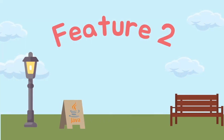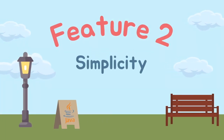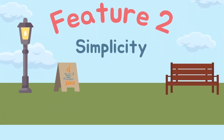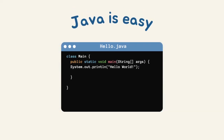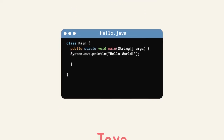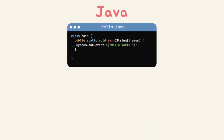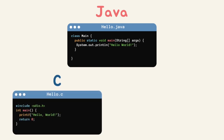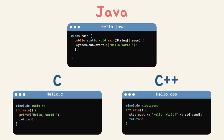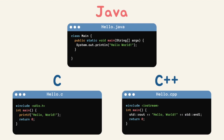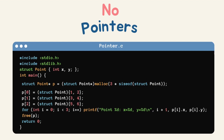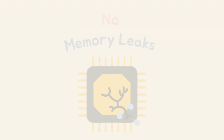The second feature is simplicity. Java was intentionally crafted to be a user-friendly and uncomplicated programming language. Although its syntax drew inspiration from C and C++, it was engineered to eliminate numerous complexities and potential issues often found in those languages. Notably, Java does not include pointers and memory leaks, thanks to its automatic garbage collection.